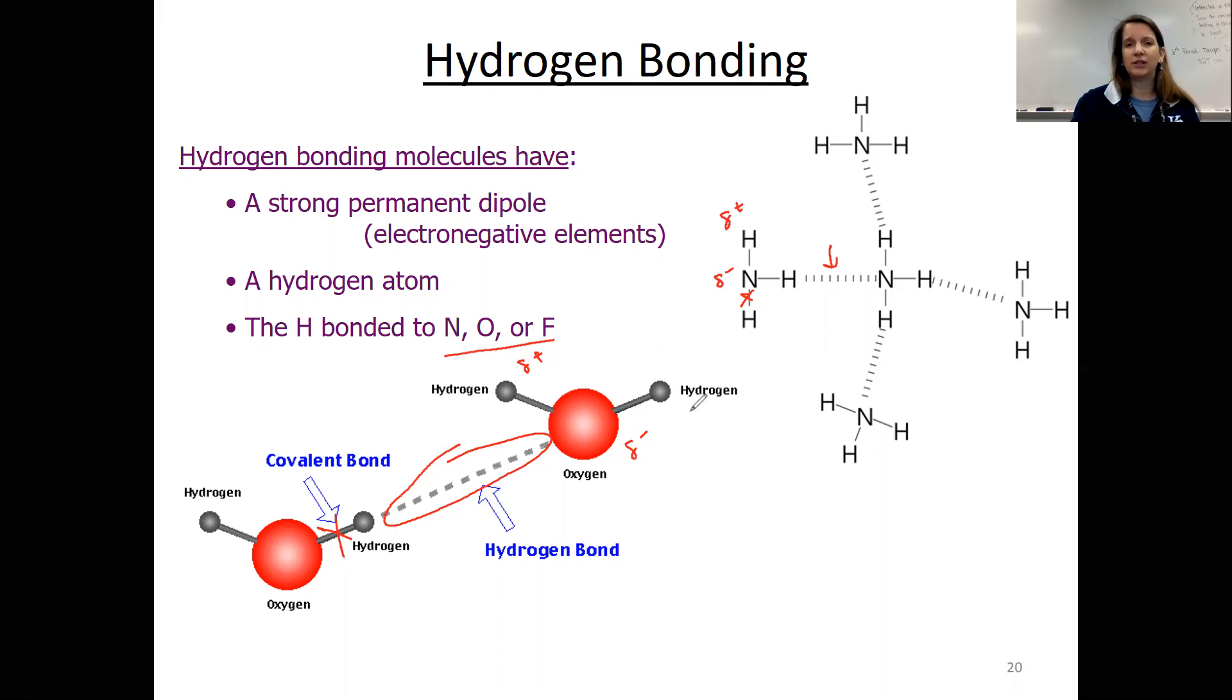So that strong dipole creates that really strong intermolecular force between this slightly positive end of the one molecule and the slightly negative end of a different molecule. Now, hydrogen bonding is only going to exist when you have the hydrogen bonded to nitrogen, oxygen, or fluorine in the molecule, because that's when your big electronegativity difference is going to be created, creating those really strong dipoles to attract nearby atoms.